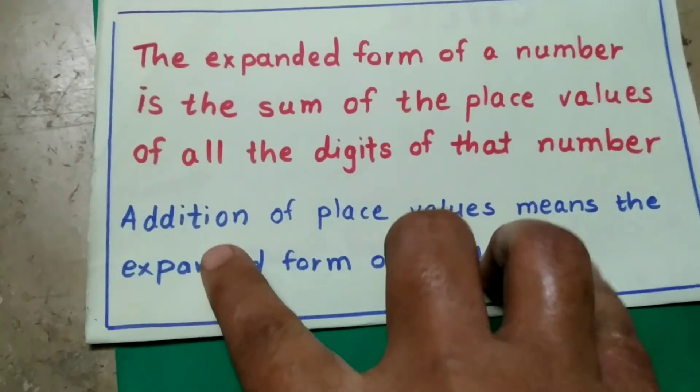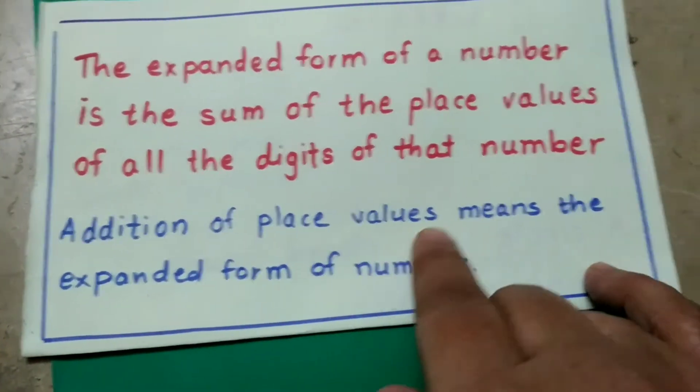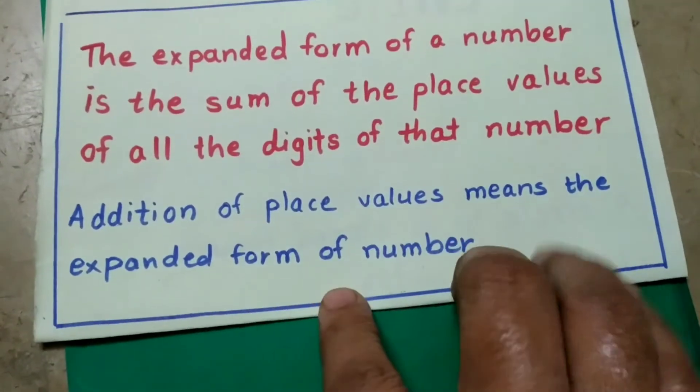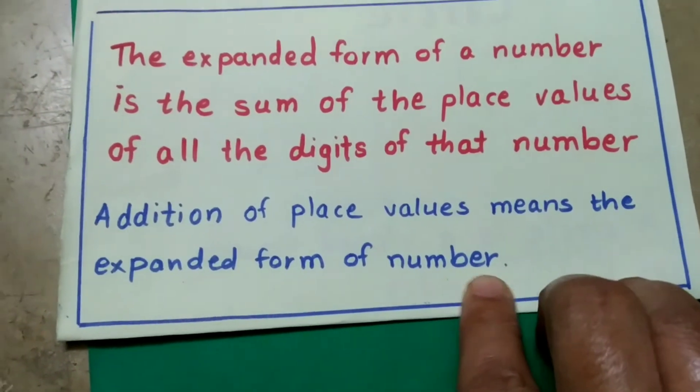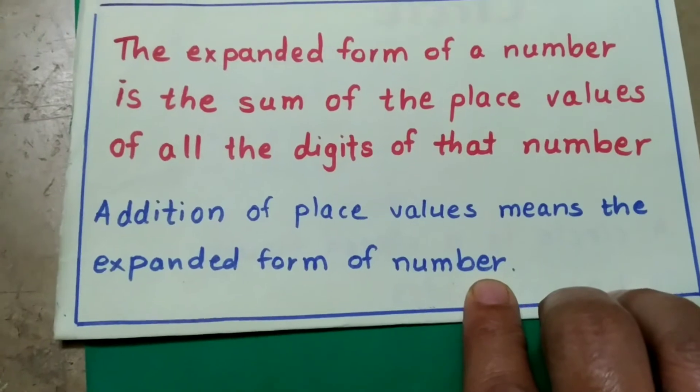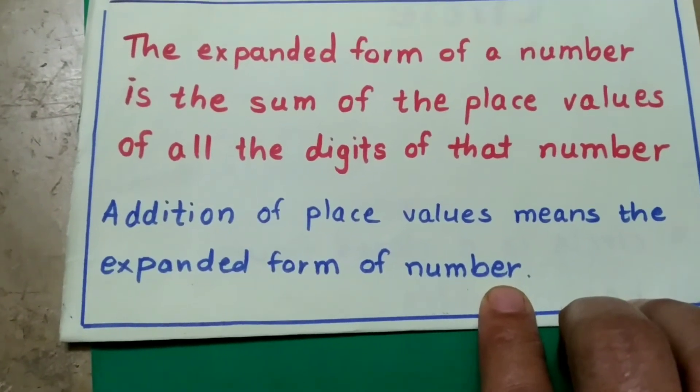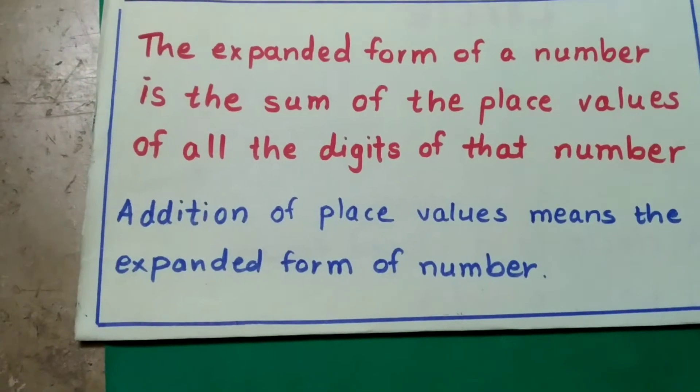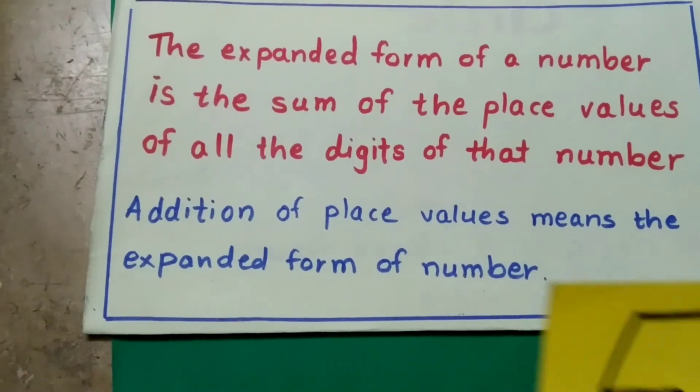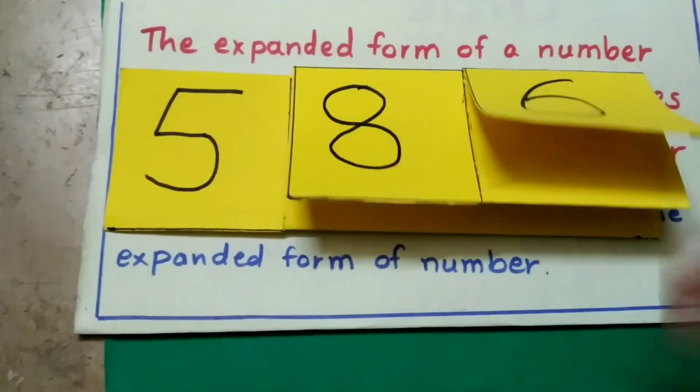Addition of place values means the expanded form of a number. We have learned to write the expanded form of a 3-digit number in the same way last year. Let's have a look here.